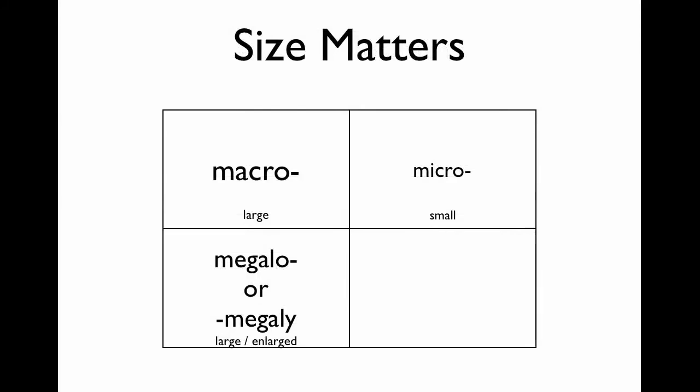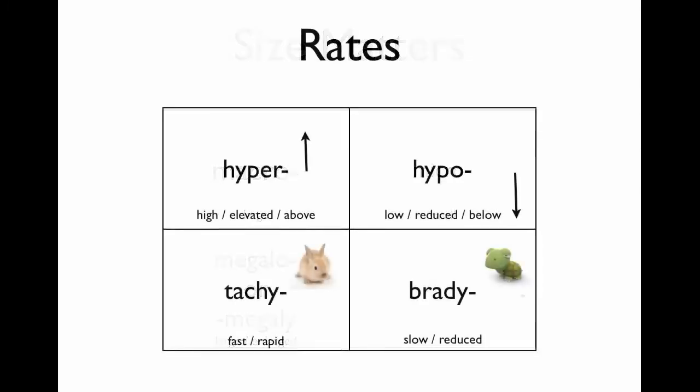A lot of terms, especially prefixes, relate to size. Macro means large, micro means small, and megalo or megale means large or enlarged. Rates are really important to note because many prefixes look very similar but mean dramatically different things. For example, if your patient is hyperthyroidic, their thyroid is overactive; if they are hypothyroidic, the thyroid is underactive. The main part of the word looks the same, but changing the prefix completely changes the meaning.